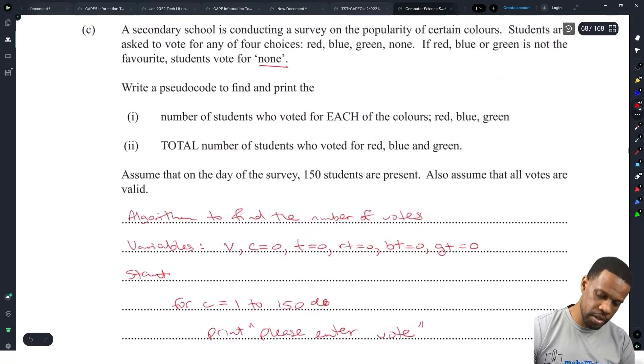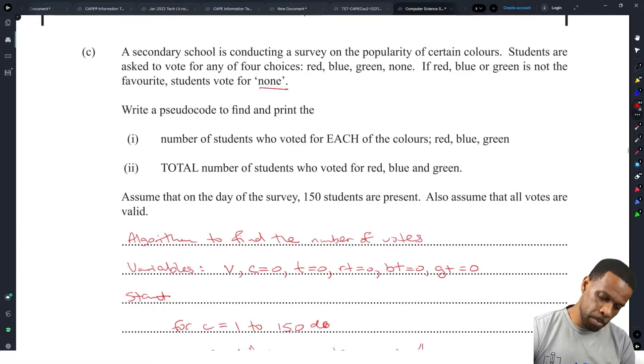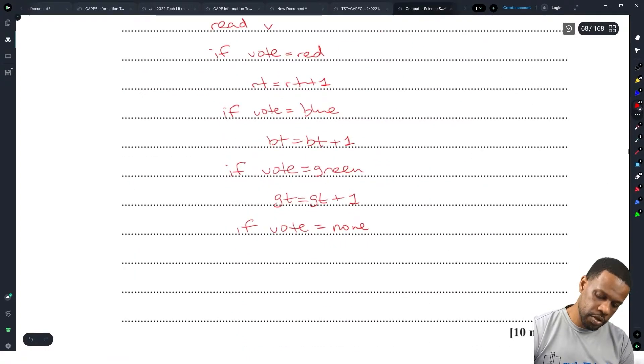If vote is equal to none. Actually, we do have to care if vote is equal to none. Then they just say if red, blue or green is not the favorite, students vote for none. But we don't have to keep track of none. They just want the number of students who voted for red, blue and green. So we don't need to keep track of none. There's no need to bother with it, because it doesn't matter.